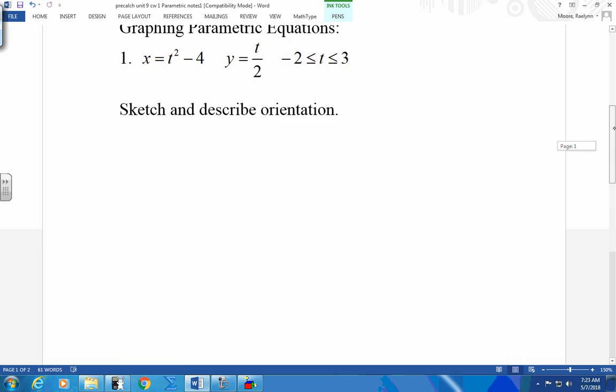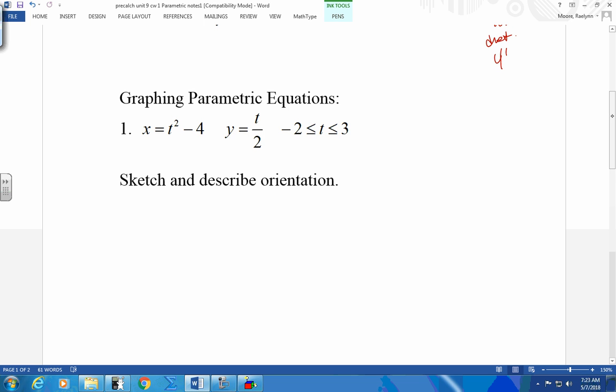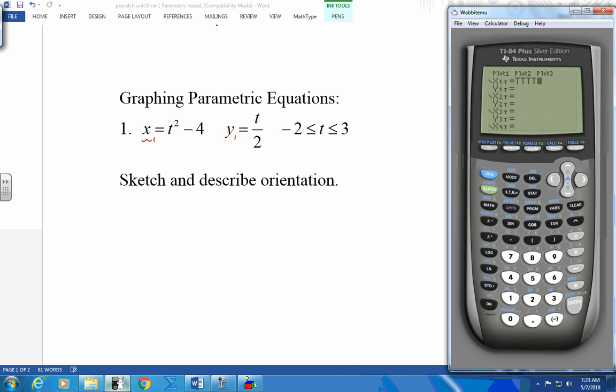We're going to go to graphing your parametrics. Now everything is graphed in terms of time. This is where your X would have been. Now we're getting your X one equation, your Y one equation. You have a pair of equations. And each pair of equations is based on the time. So let's go put this in your calculator and see what this looks like.